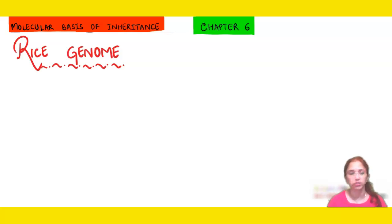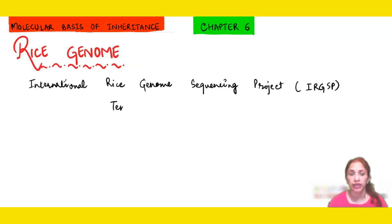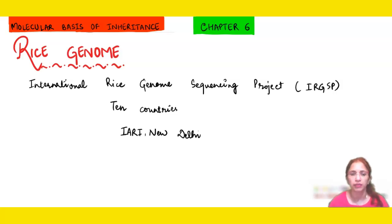The first project on rice genome was the International Rice Genome Sequencing Project, abbreviated as IRGSP. This was an international project and almost 10 countries were involved, including India. Basically the initiative was started from India — the Indian Agricultural Research Institute, IARI, situated in New Delhi, was the prime institute associated with the sequencing of rice.